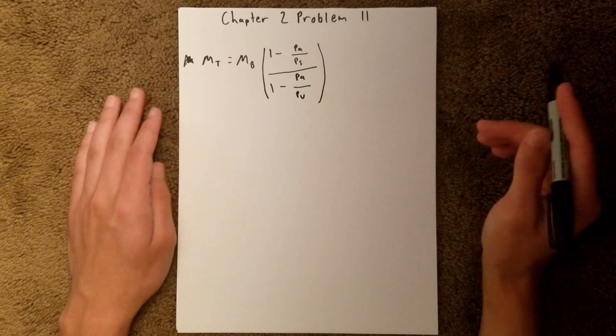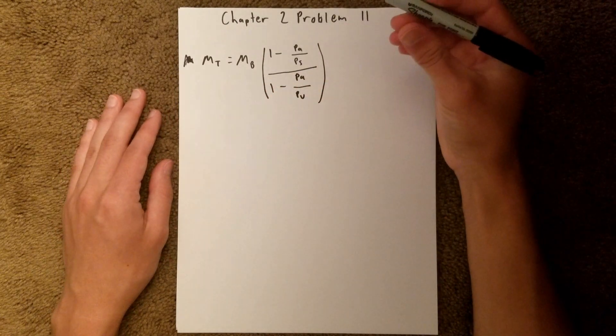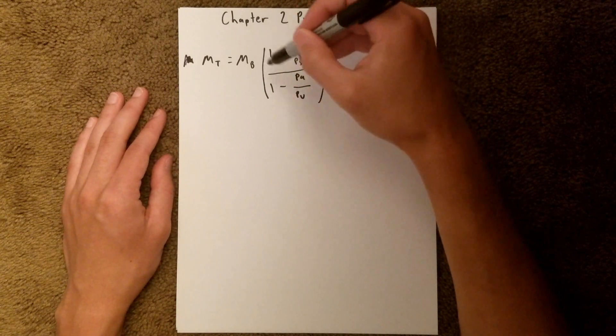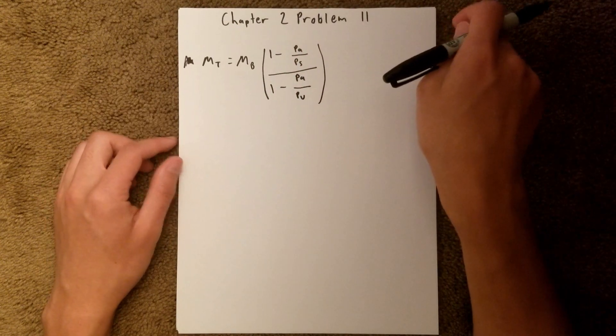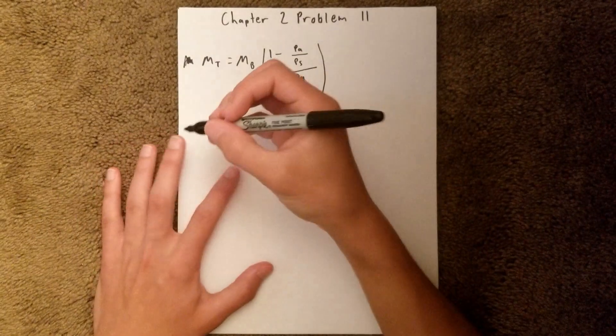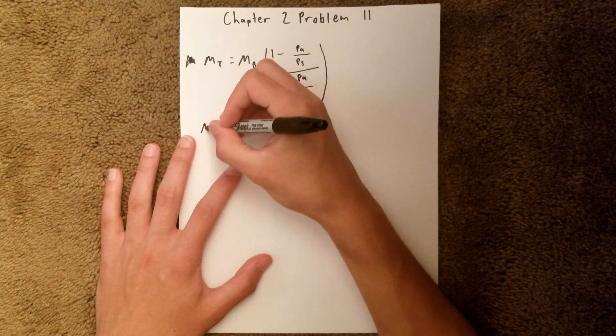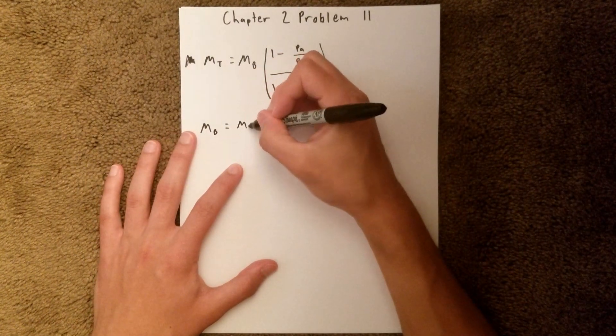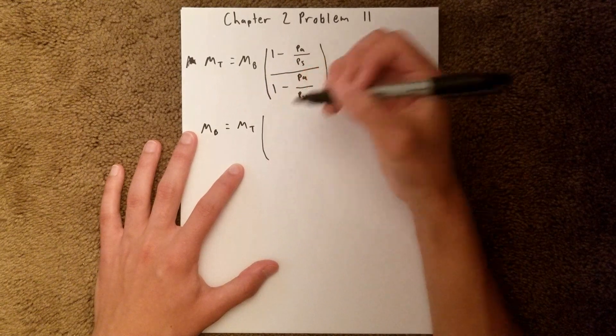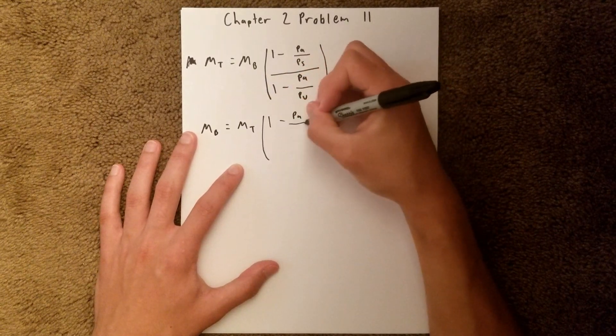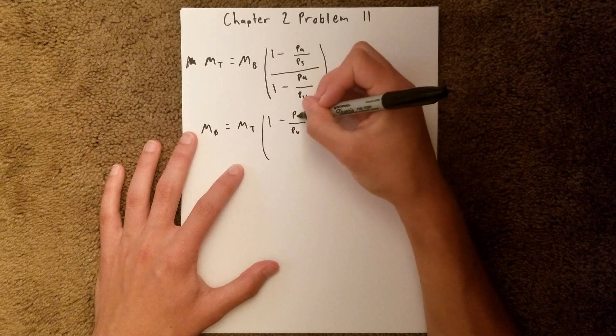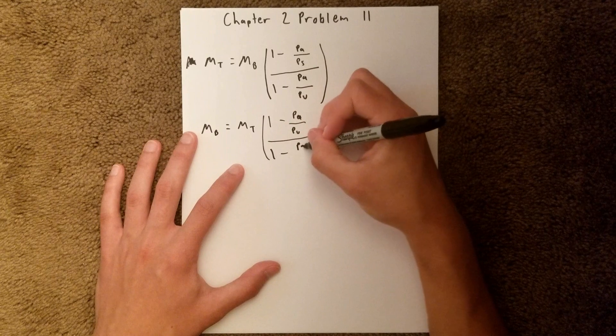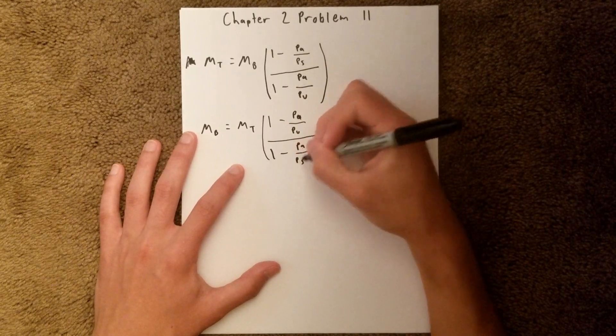And we need to find the apparent mass, which is this value here. So we could multiply both sides by this denominator, and then divide both sides by this numerator to solve for the apparent mass. So then the apparent mass is going to equal the true mass times 1 minus density of air over the density of your unknown, over 1 minus density of air over density standard.